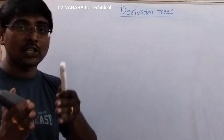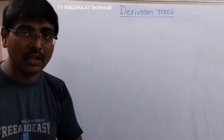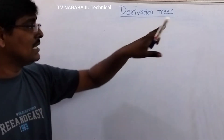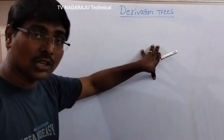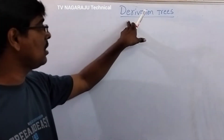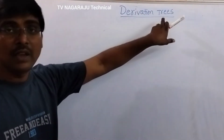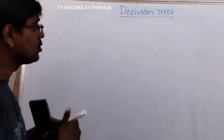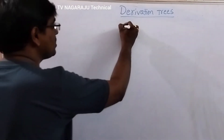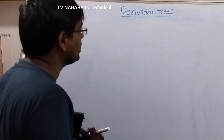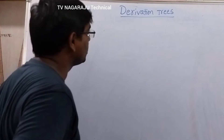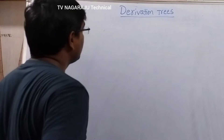If the string generation is represented in a tree structure, it is called a derivation tree, or also called a parse tree.